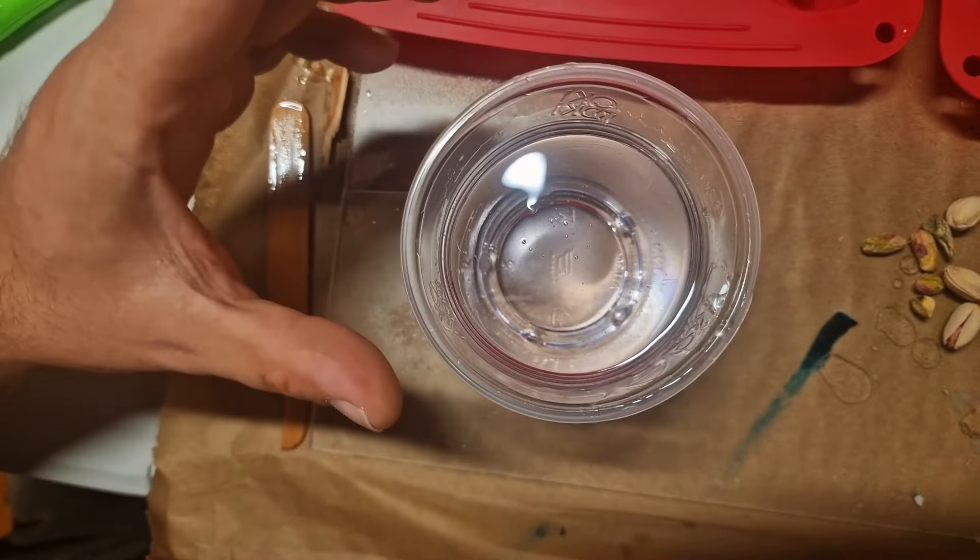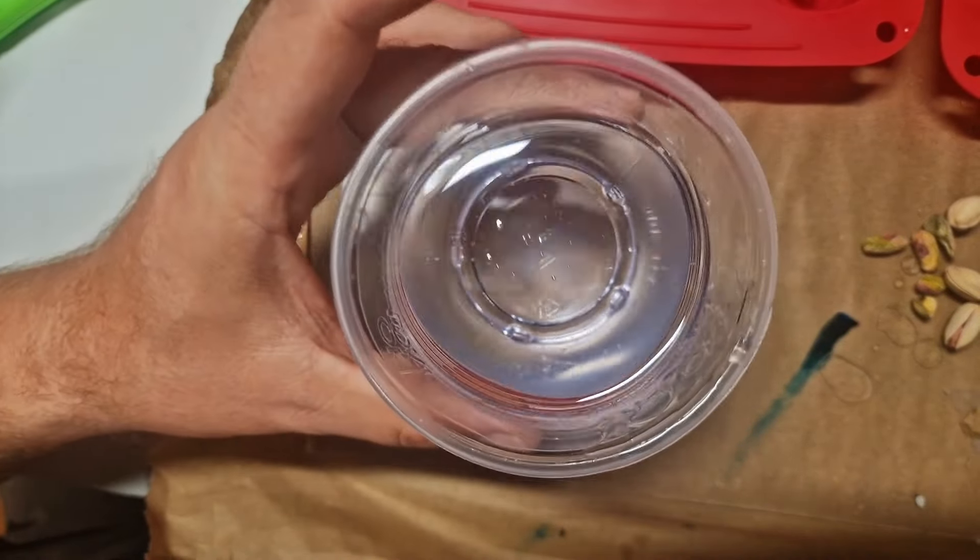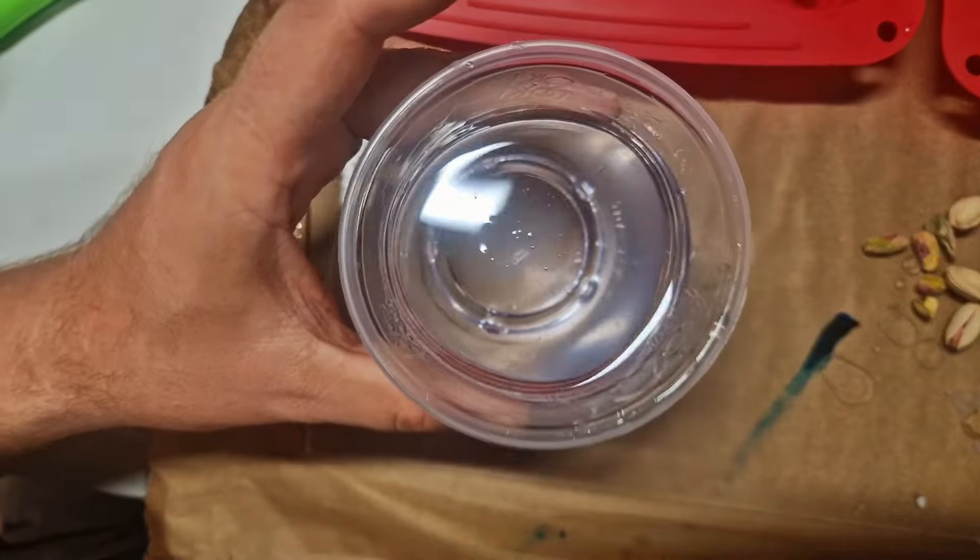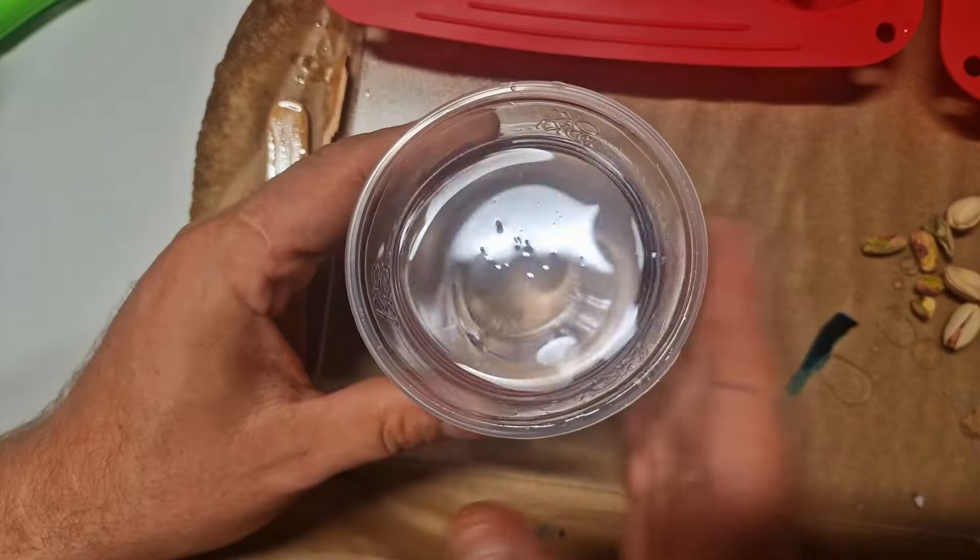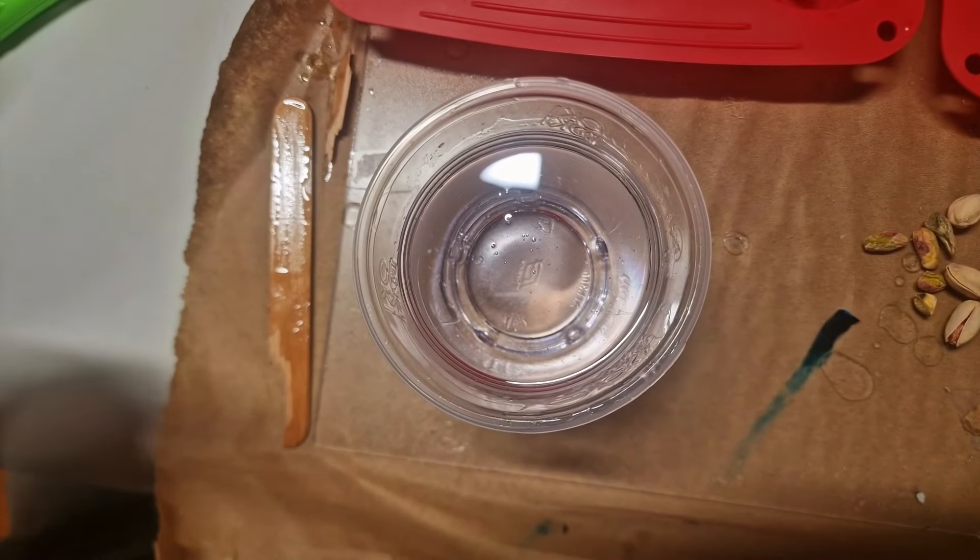I eyeball it every single time and when I see that I don't see the streaks in it and I think it's mixed in enough. So this is how you mix your resin in without having bubbles in it.